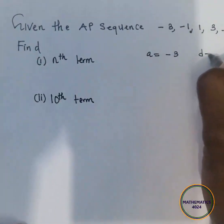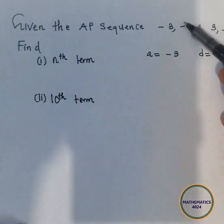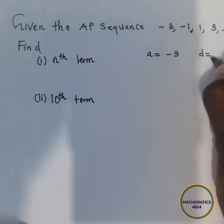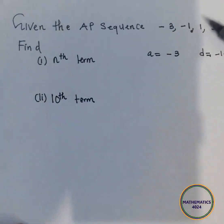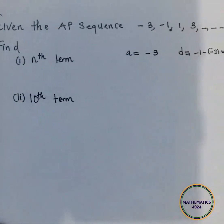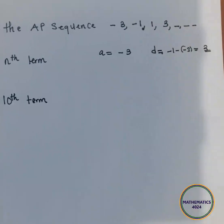Your common difference, which is the difference between two consecutive terms. For example, the second here and the first. So negative 1 minus negative 3, what do you get? You get 2. We should also do the same and see if 1 and negative 1 are giving you 2, which is correct. So our common difference is 2.